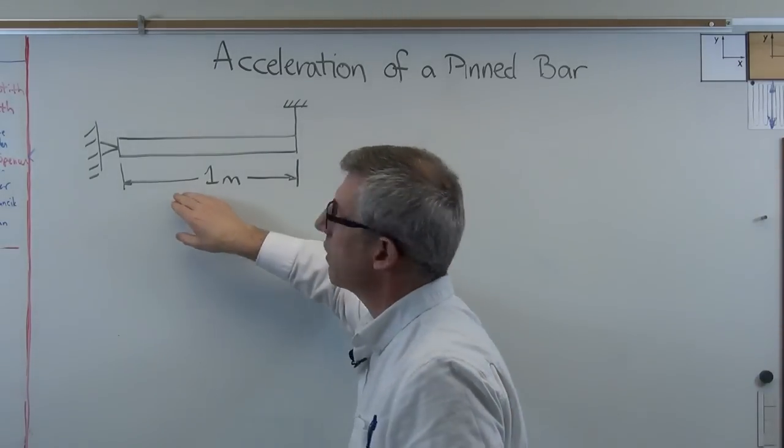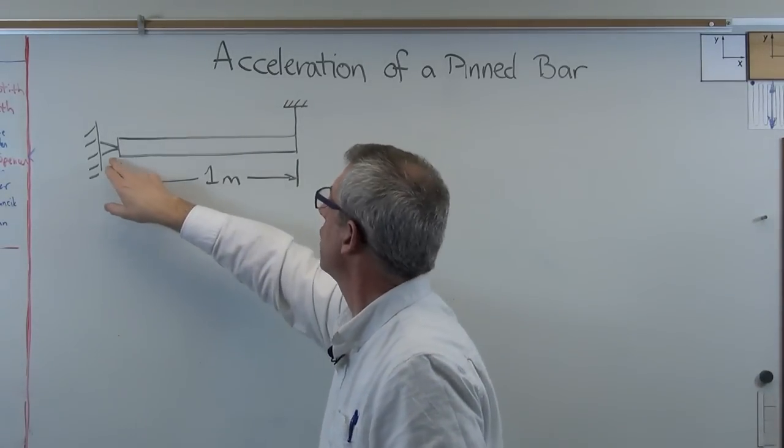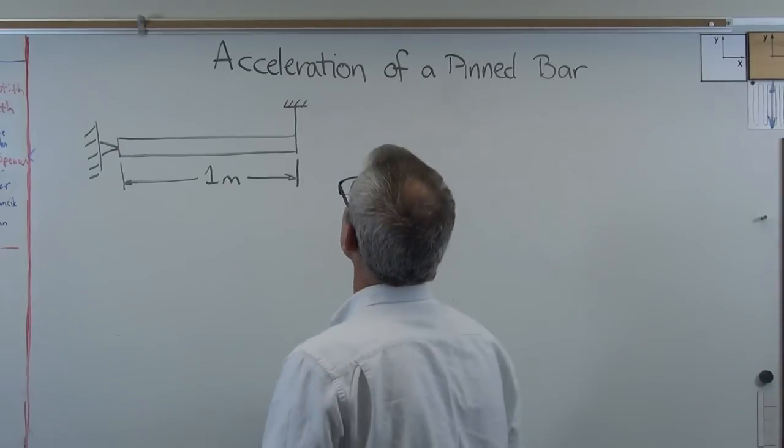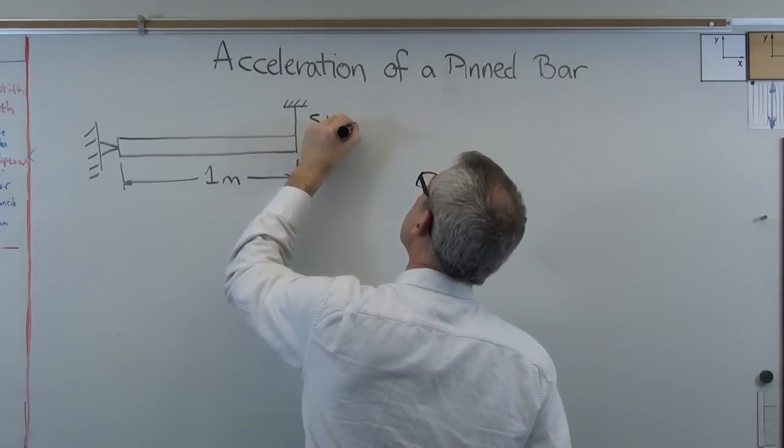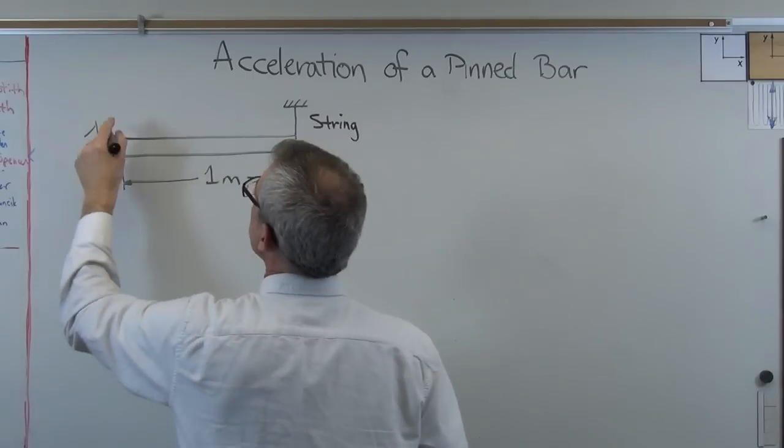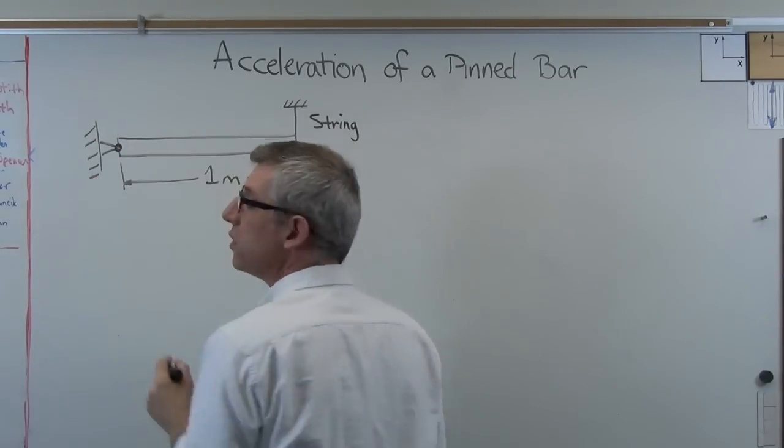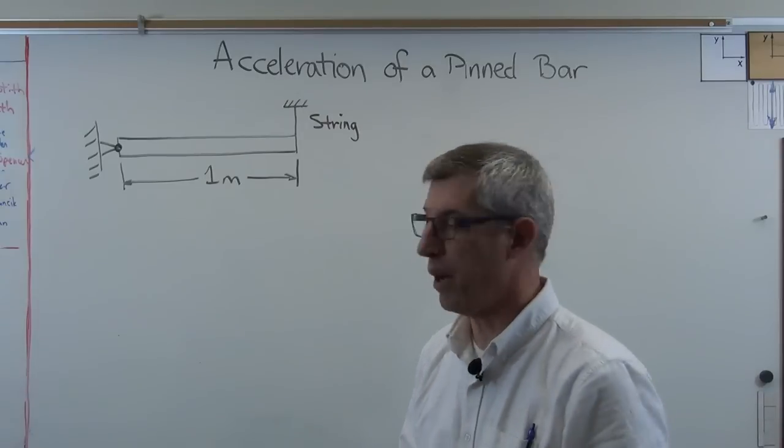So here's what it looks like in the ideal. I've got a bar here pinned on the left end, and there's a little string here maybe on the right end. That's a little piece of string right there, and that pivot right there is assumed to be frictionless. Really, really good bearings.